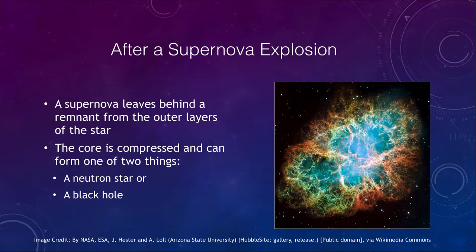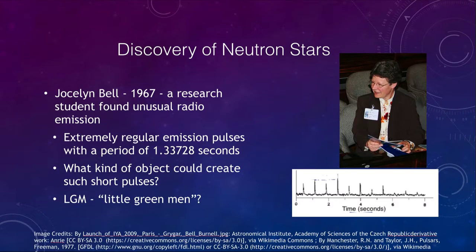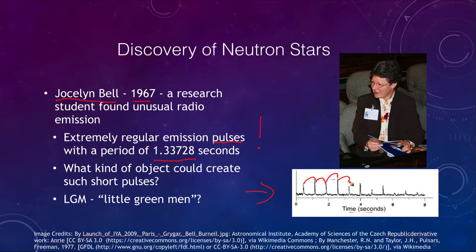Let's look at how these were discovered. How did we discover neutron stars in the first place? This discovery was made by Jocelyn Bell in 1967. She was a research student and she found unusual radio emissions. What she found is that it was an extremely regular emission — the pulses of radio emission were coming every 1.33728 seconds. This was extremely consistent and regular, not just randomness.